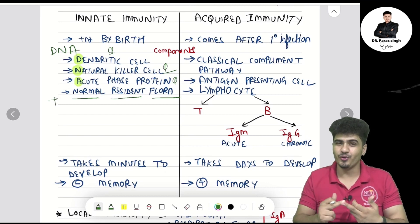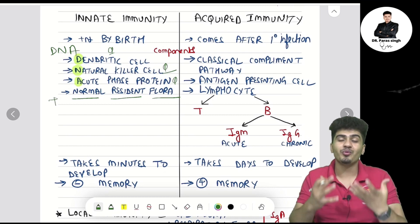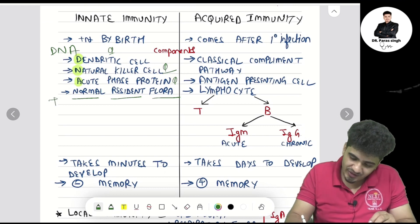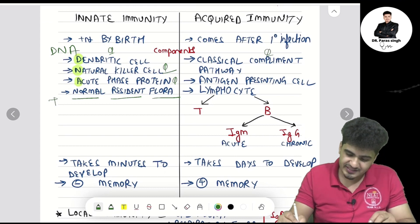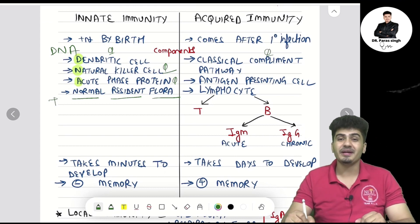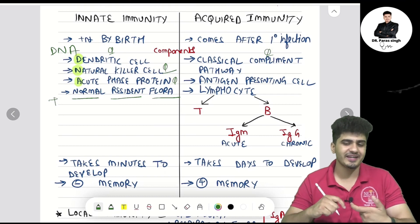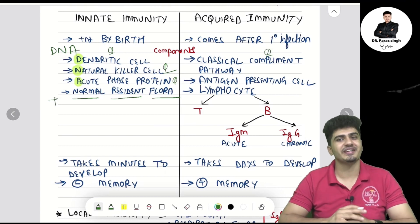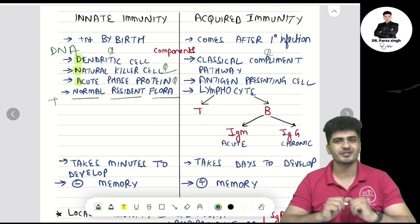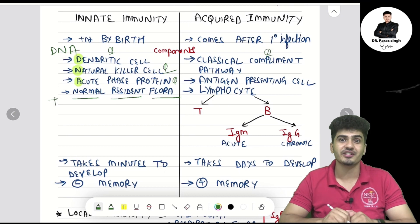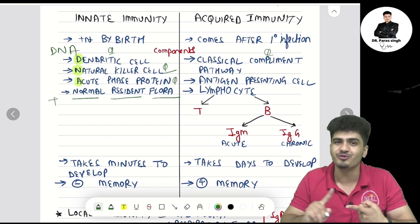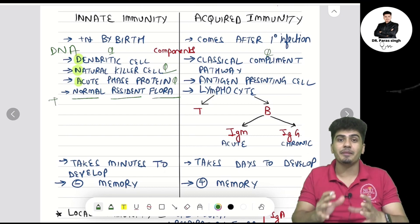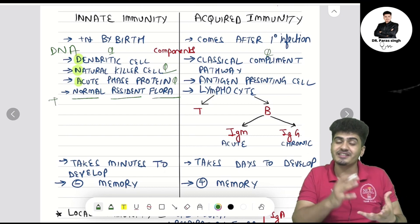The components of acquired immunity: number one is the classical complement pathway, number two is your antigen presenting cell, and number three — very important — is your lymphocytes.